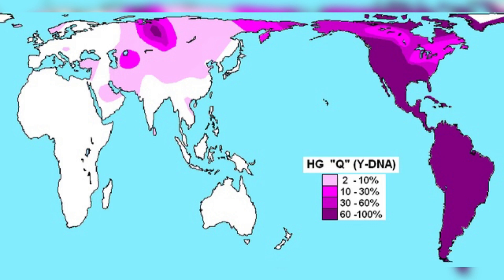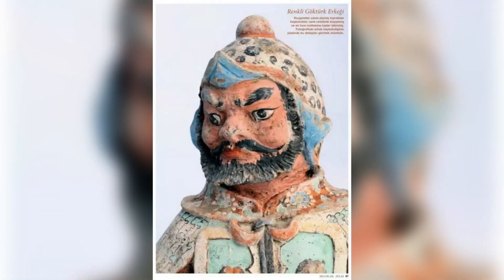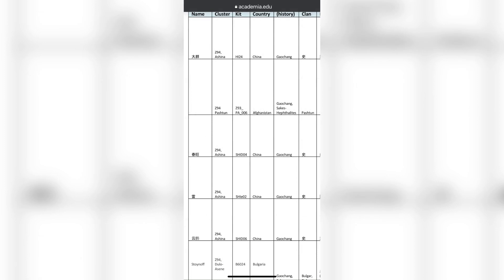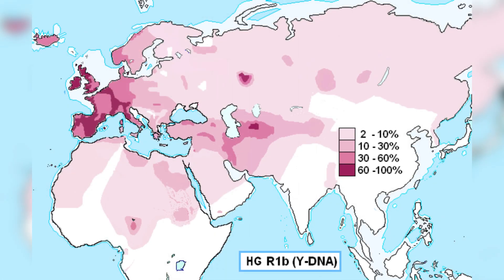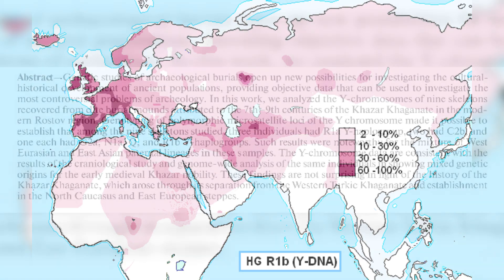They also found haplogroup Q, which is major in Native American populations, though one of the major Turkic tribes — the Ashide — also carried the Q haplogroup, making it a significant Turkic branch as well. And R1B, which started with the Yamnaya culture and the Corded Ware culture, very close to R1A. Certain branches of R1B appear within the Basque-related Turks as well. R1B got everywhere.